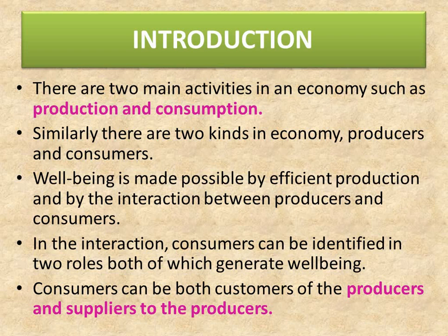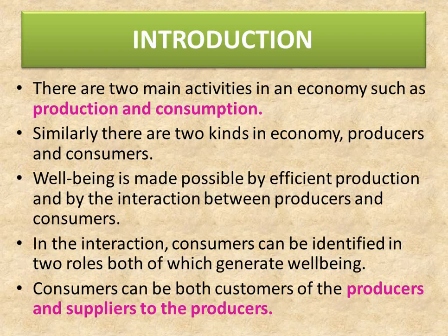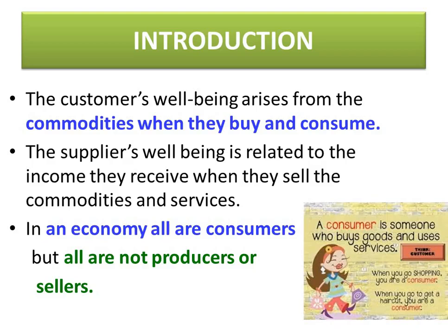The well-being of an economy is made possible by efficient production and by the interaction between producers and consumers. Consumers can be both customers of the producers and suppliers to the producers. The customers' well-being arises from the commodities they buy and consume, while the suppliers' well-being is related to the income they receive when they sell the commodities and services.